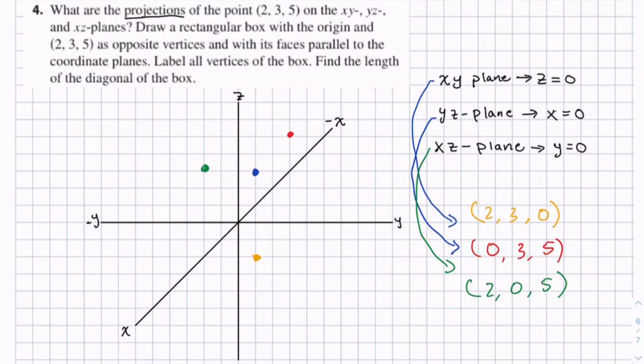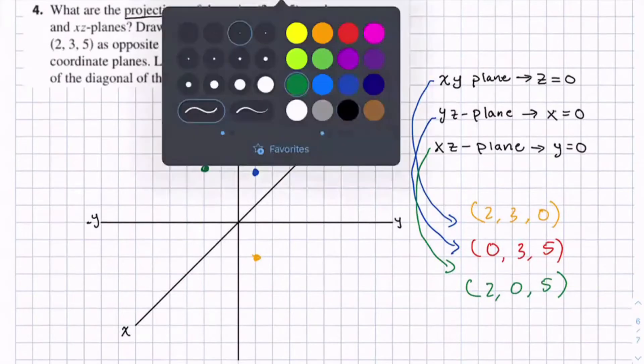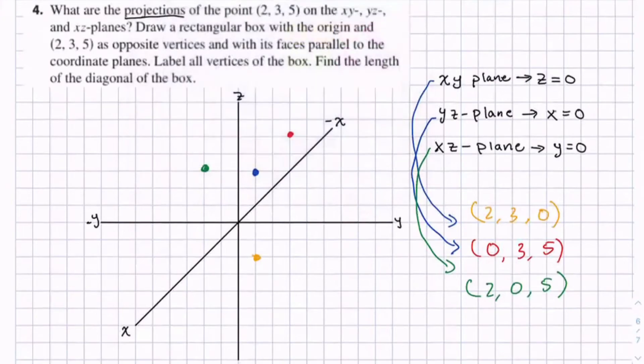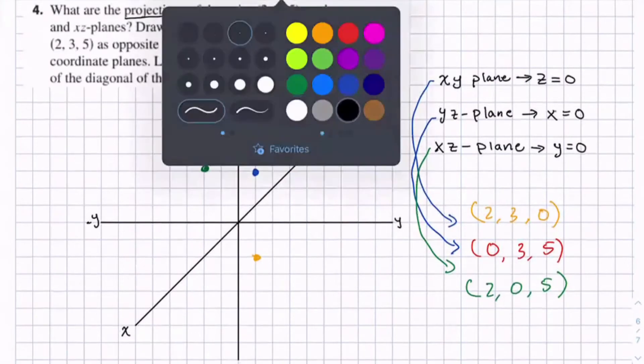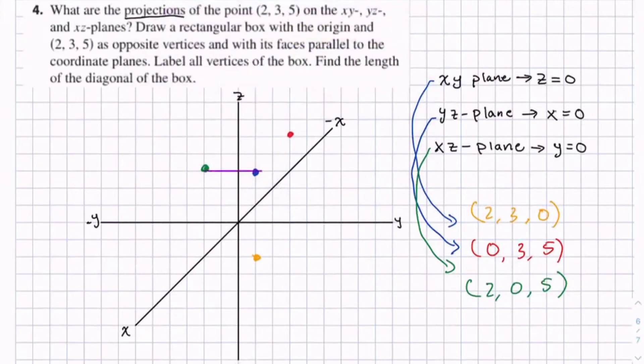And we need to create a box out of this with faces parallel to the coordinate planes. So we can just draw the segments of the box. Let's just start drawing, just attaching each of the points. And we can kind of see the shape of the box, it's going to form.